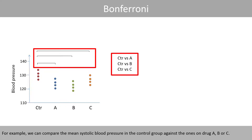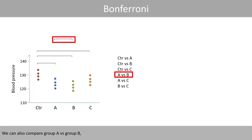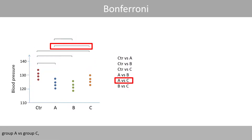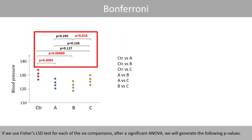For example, we can compare the mean diastolic blood pressure in the control group against the ones on drug A, B, or C. We can also compare group A versus group B, group A versus group C, and group B versus group C. If we use Fisher's LSD test for each of the six comparisons after a significant ANOVA, we will generate the following p-values.